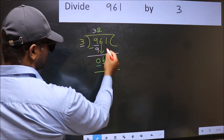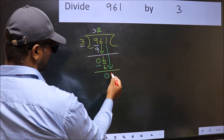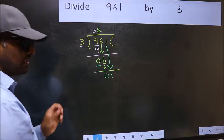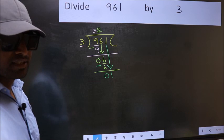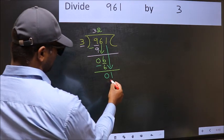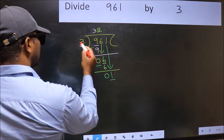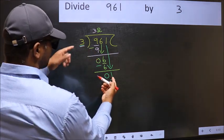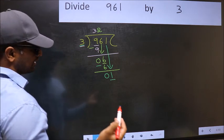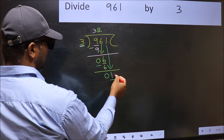After this, bring down the beside number. So 1 down. Now, after this step, the mistake happens. And the mistake is this. Here we have 1, and here 3. 1 is smaller than 3. So what many do is, they directly put a dot and take 0.